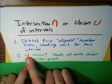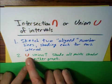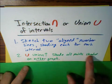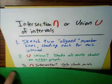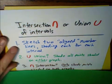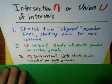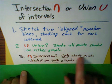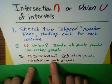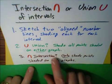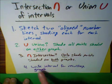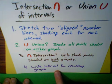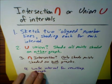If we're dealing with a union of the two intervals, we shade all the points that are shaded on either graph. However, if it's an intersection, we only shade the points that are shaded on both — this is actually more tricky. Lastly, we write an interval for the resulting graph. Let's take a look at a couple of examples.